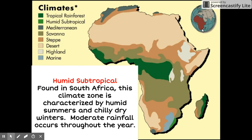Fourth is the humid subtropical climate. As its name suggests, this type of climate is humid and is located below the tropical rainforest climate. Found in South Africa, this climate zone is characterized by humid summers and chilly dry winters.